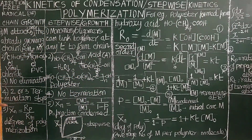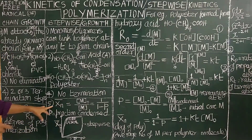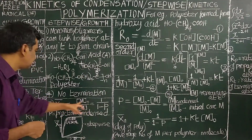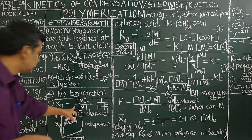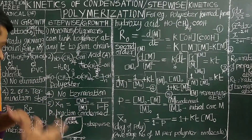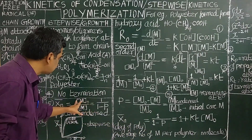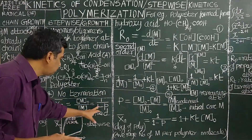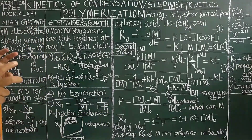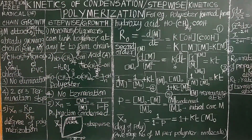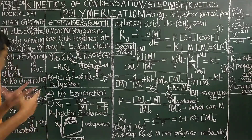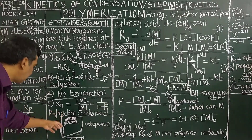The degree of polymerization is very important. In free-radical polymerization it is calculated from the ratio of rate of propagation to rate of termination. Whereas in condensation polymerization, since there is no termination, the degree of polymerization is calculated from the ratio of initial monomer concentration M₀ to monomer concentration M at time T. This equals 1/(1−P), where P is the fraction of monomer molecules condensed or reacted. The degree of polymerization is also called the chain length of the polymer chain.